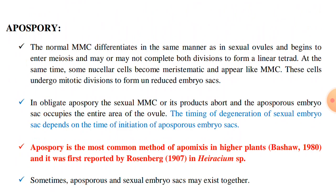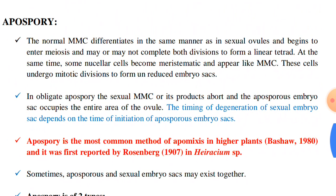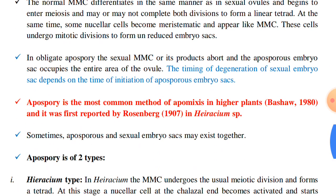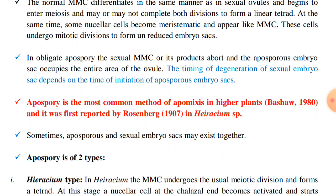Now, apospory. The normal megaspore mother cell differentiates in the same manner as in sexual ovules and begins to enter meiosis, and may or may not complete both divisions to form a linear tetrad. At the same time, some nucellar cells become meristematic and appear like megaspore mother cells. These cells undergo mitotic divisions to form an unreduced embryo sac. In obligate apospory, the sexual megaspore mother cell or its products abort and the aposporous embryo sac occupies the entire area of the ovule. The timing of degeneration of the sexual embryo sac depends on the time of initiation of aposporous embryo sacs.